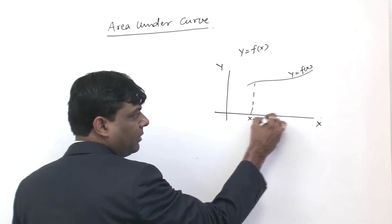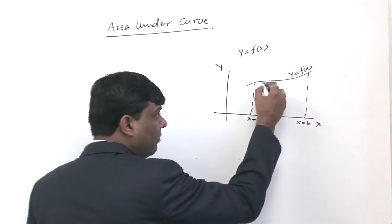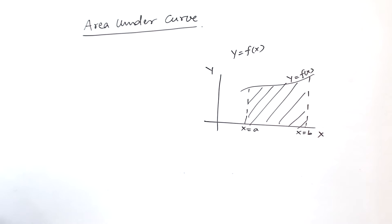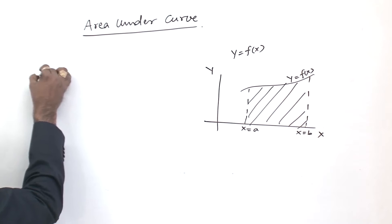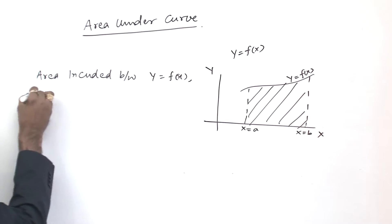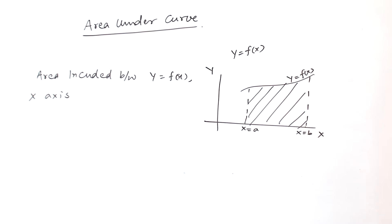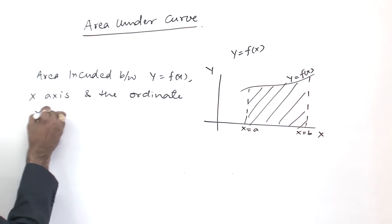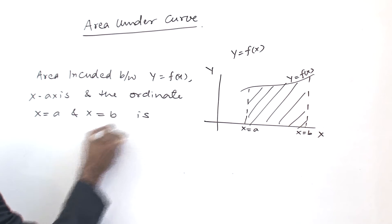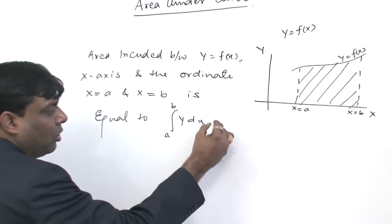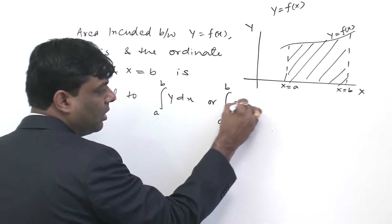This is x is equal to a, this is x is equal to b. Then the area bounded by y is equal to f(x), x-axis and the ordinate x is equal to a and x is equal to b. The area included between y = f(x), x-axis and the ordinate x = a and x = b is equal to integral a to b of y dx, or integral a to b of f(x) dx.